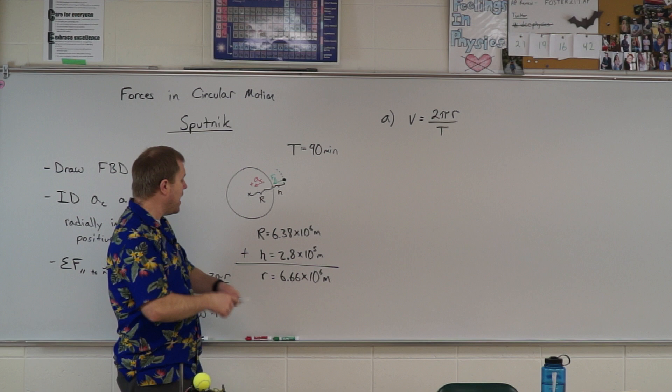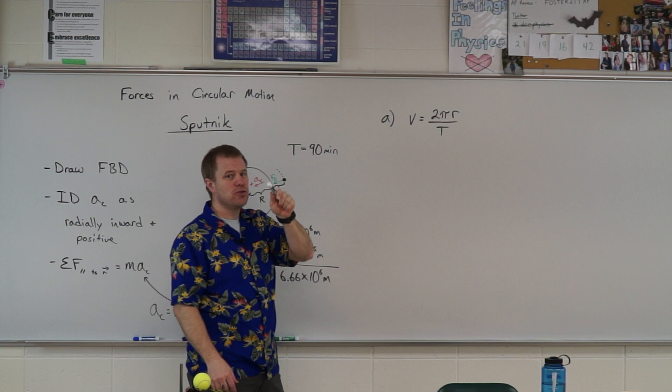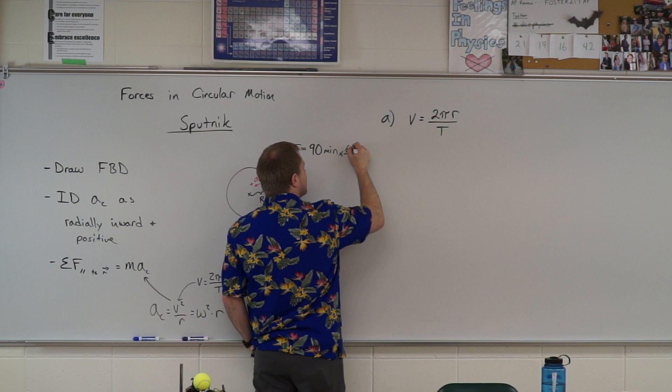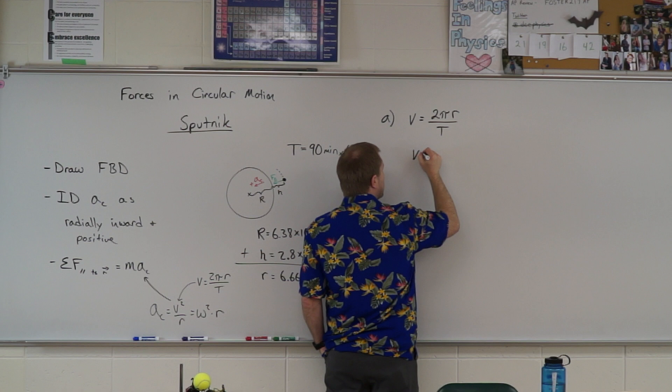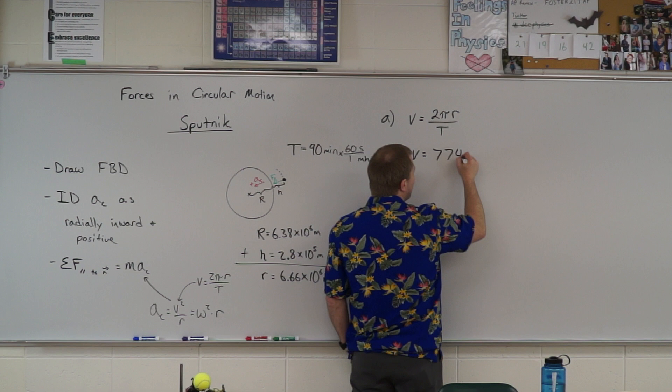Go ahead, plug this in for the radius period. Oh, it's 90 minutes. We will have to change that to seconds. So go ahead, get rid of minutes, go to seconds, 60 seconds and one minute. Plug those numbers in, we get a speed of 7,749 meters per second.